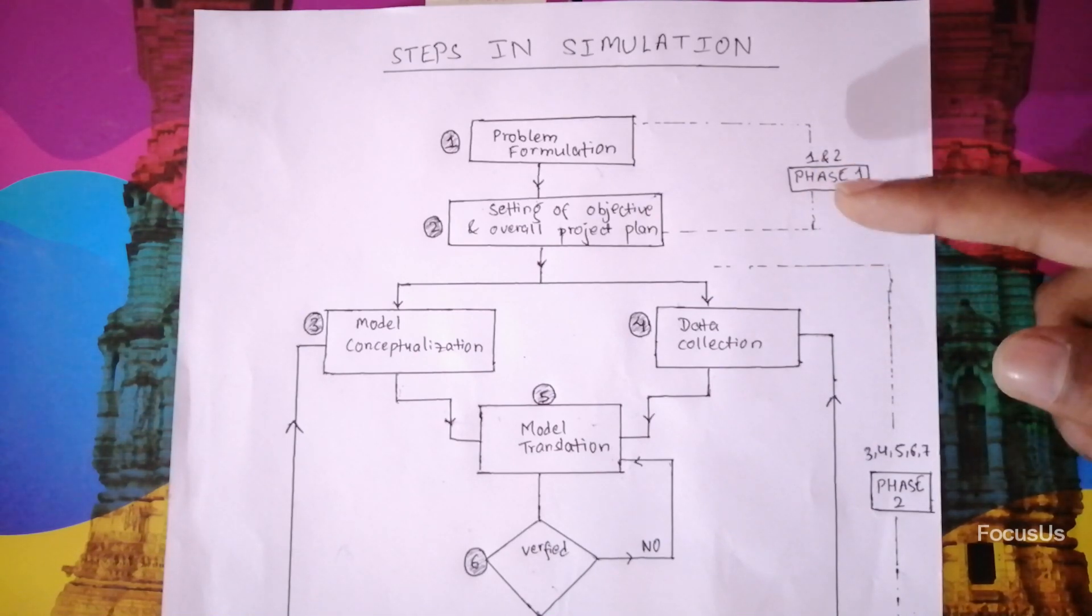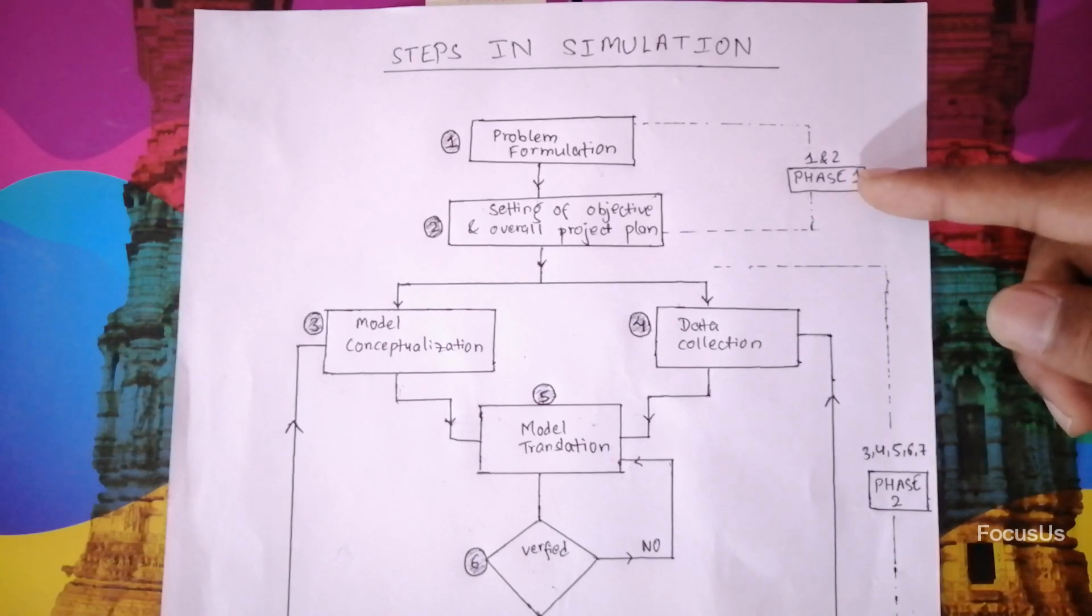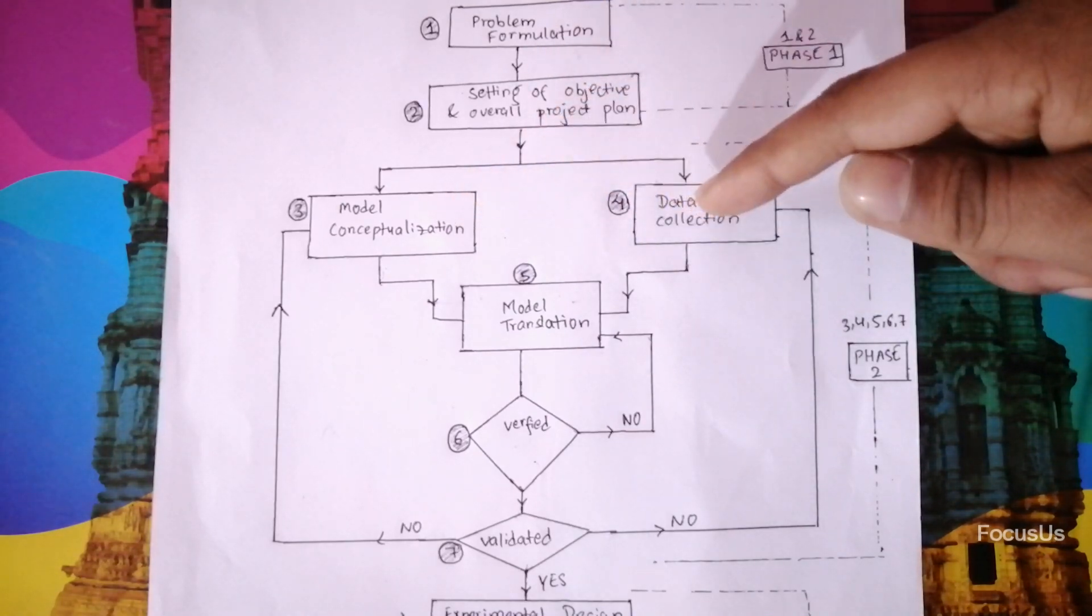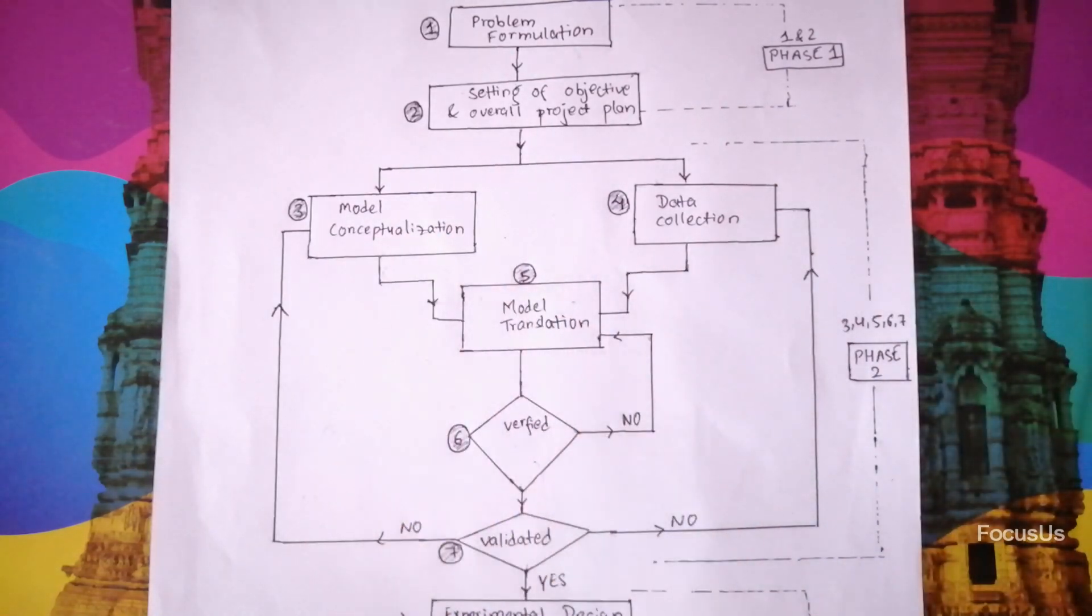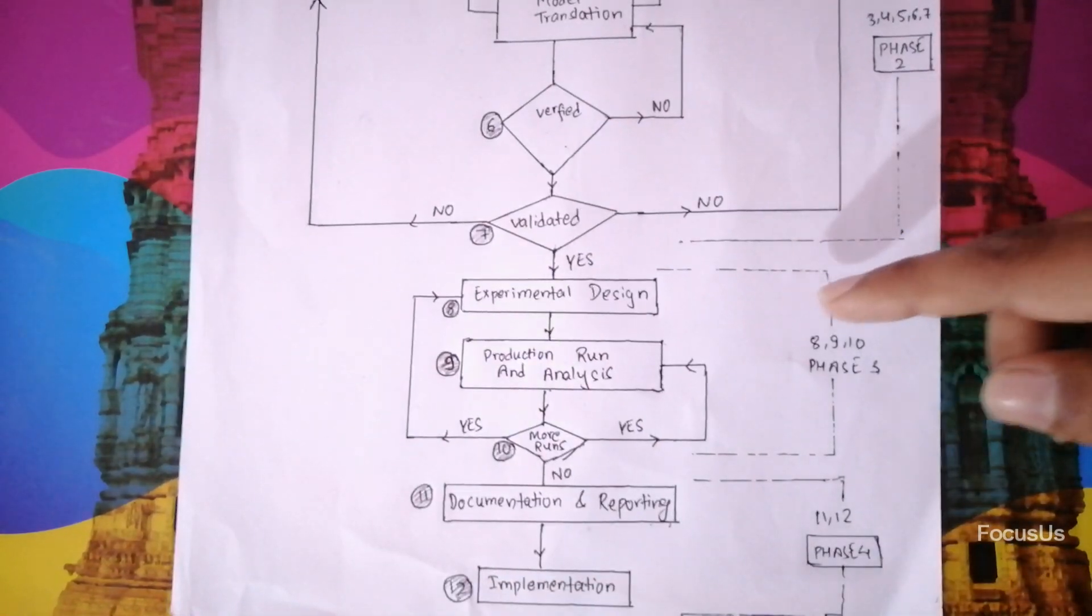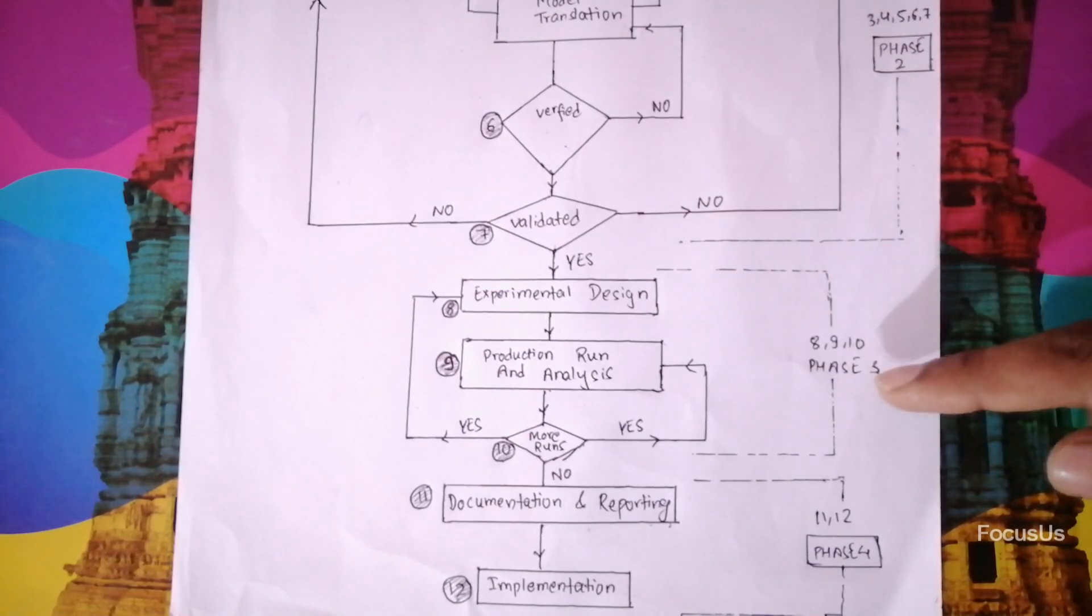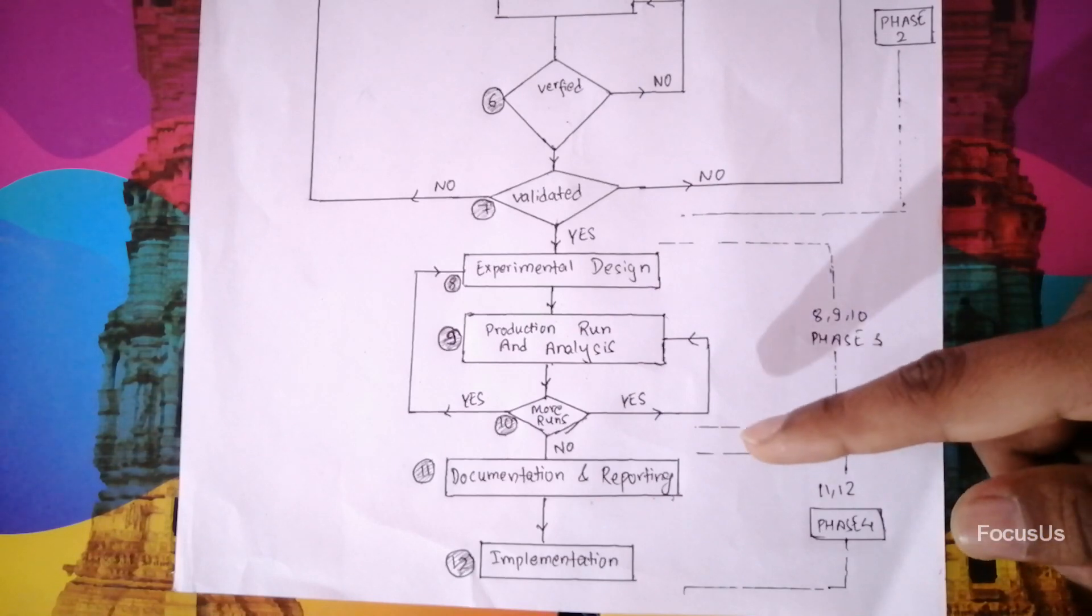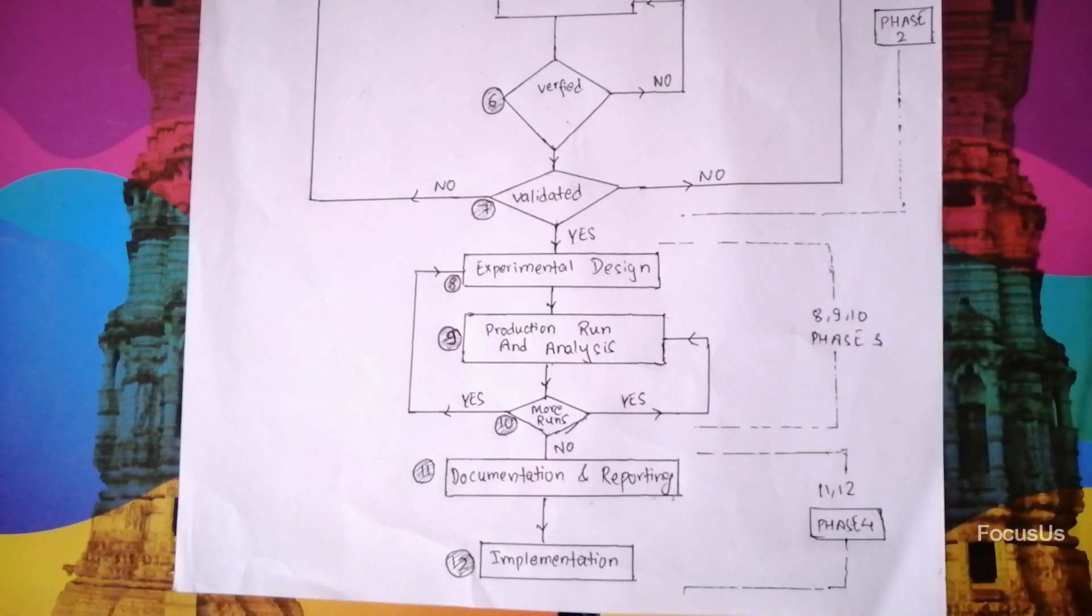Which is our phase one. So number one problem formulation and number two setting of objective and overall project plan is our phase one. Similarly, number three, number four, number five, number six and number seven is our phase two. Similarly, phase three is number eight, number nine and number ten. And lastly we have phase four which includes number 11 and number 12, which is documentation and reporting and the implementation part.